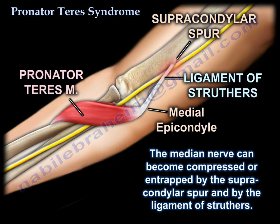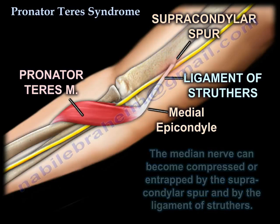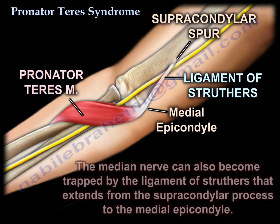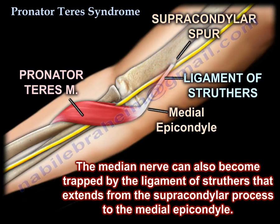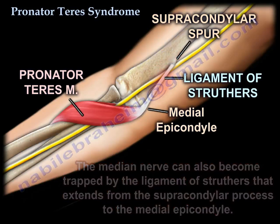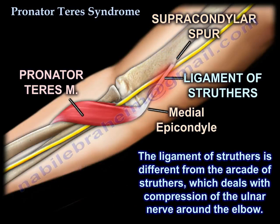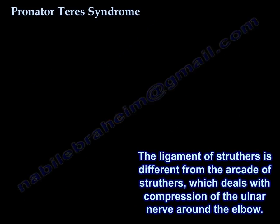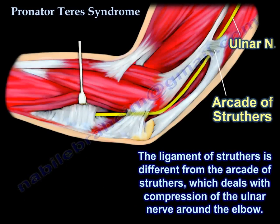The median nerve can become compressed or entrapped by the supracondylar spur and by the ligament of Struthers, which extends from the supracondylar process to the medial epicondyle. The ligament of Struthers is different from the arcade of Struthers, which deals with compression of the ulnar nerve around the elbow.